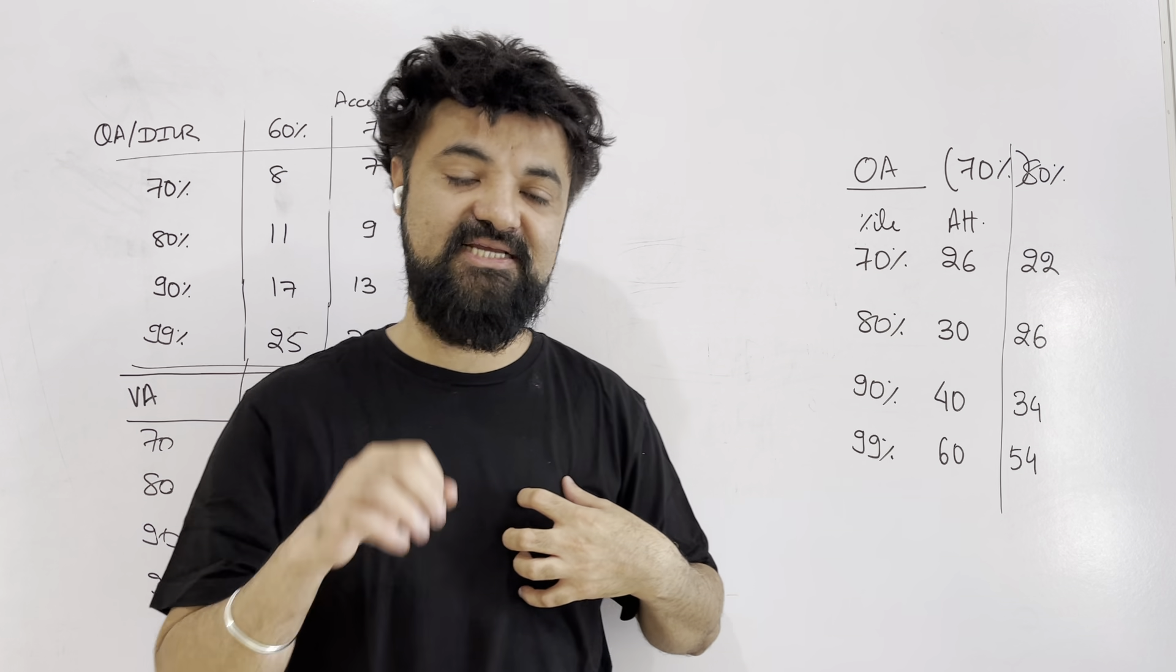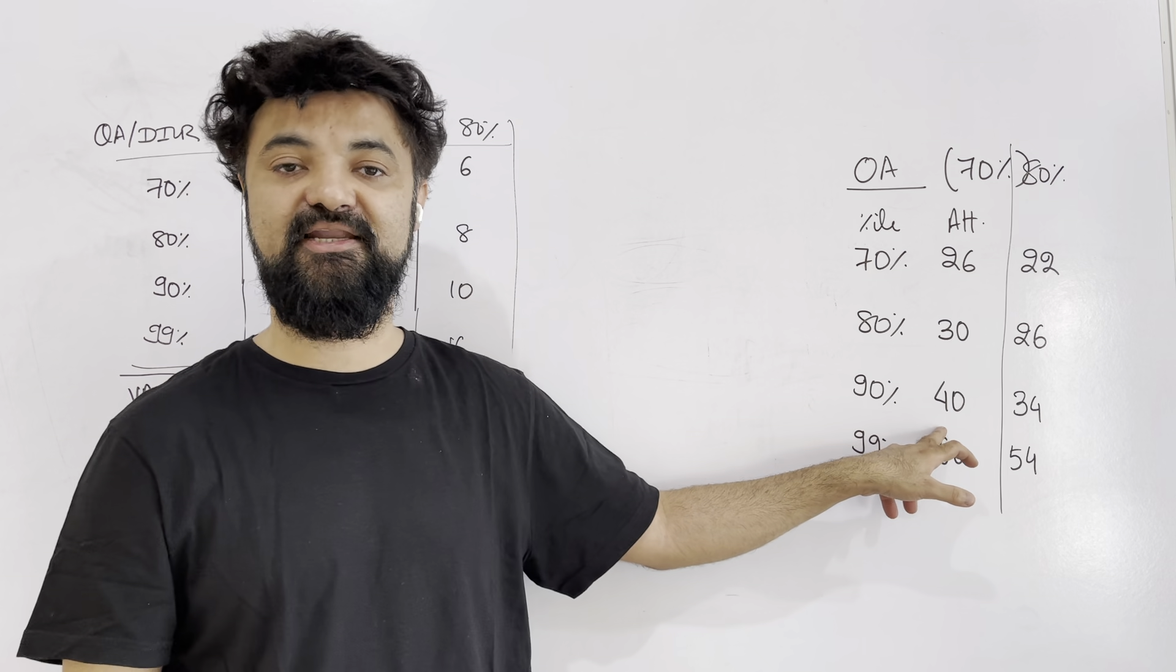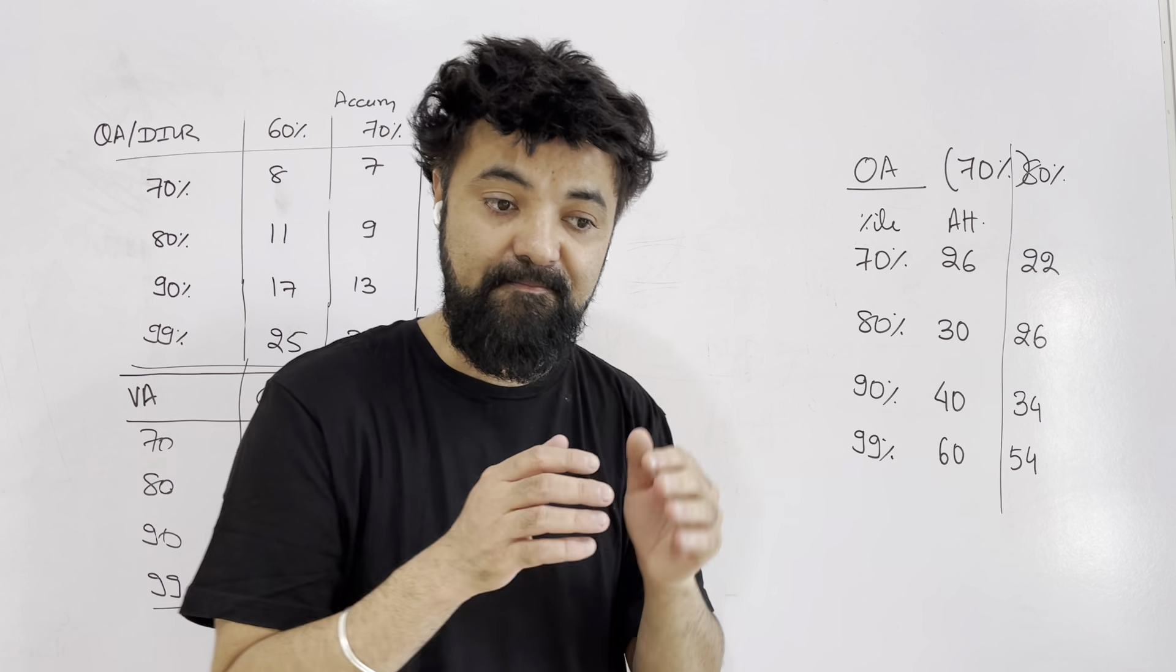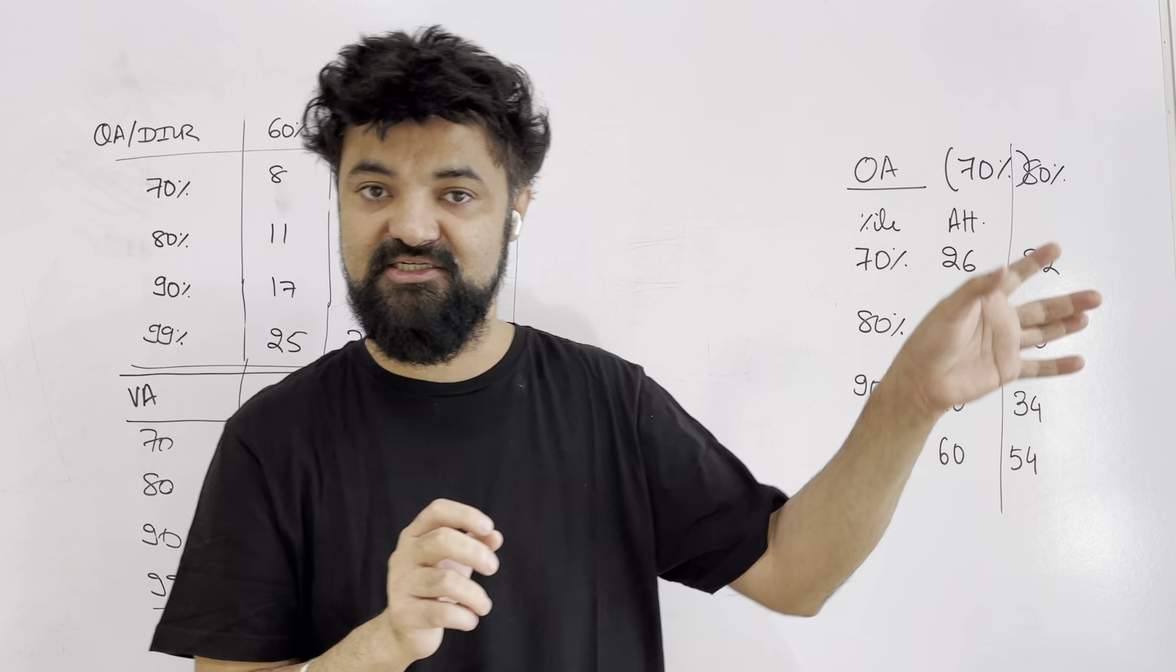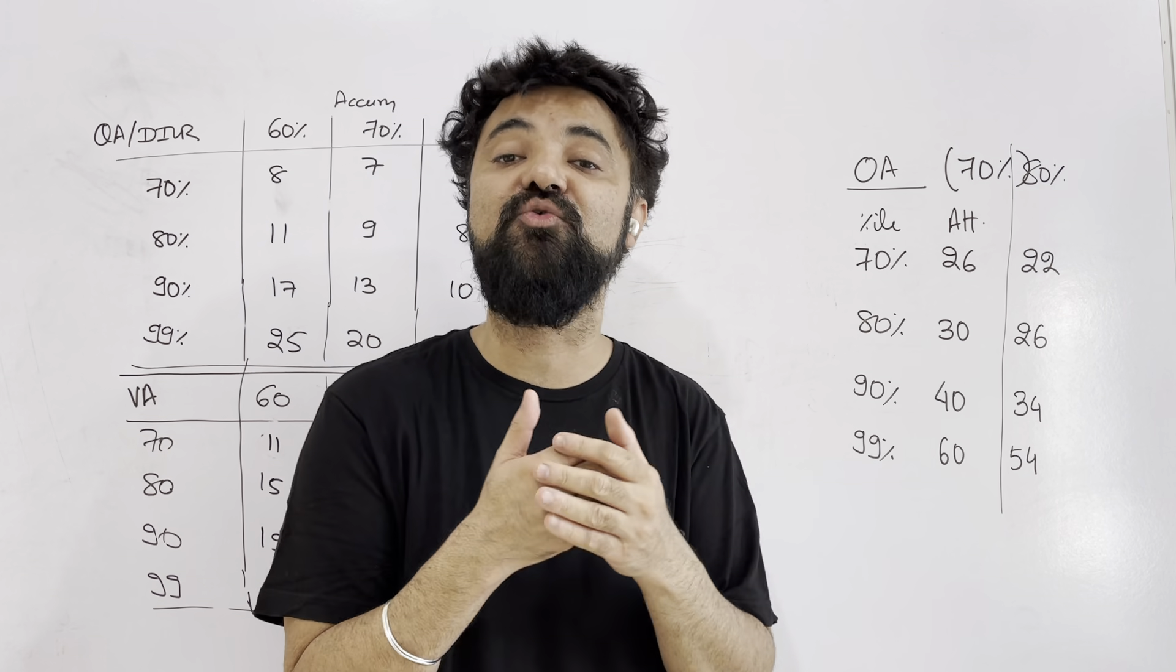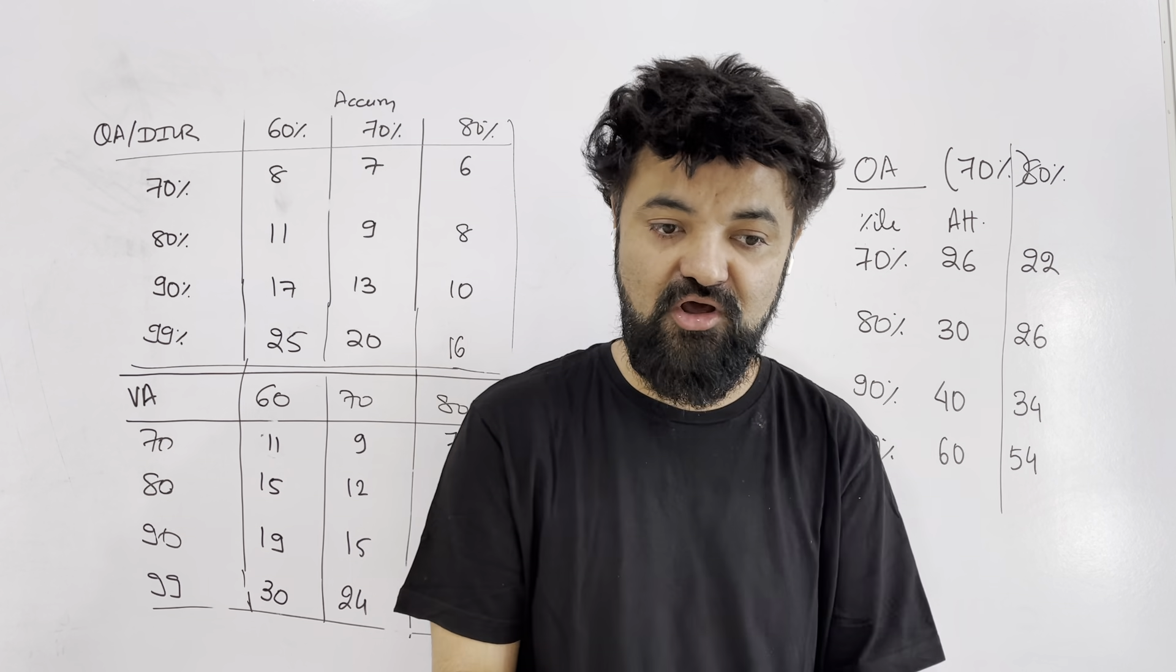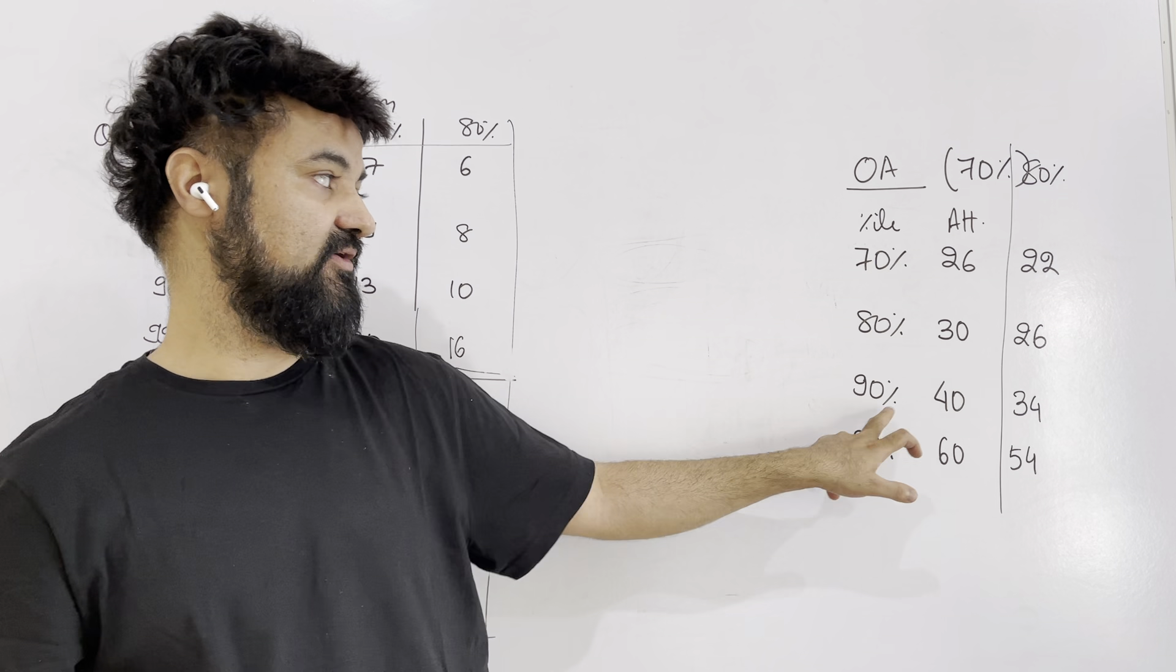For example, my accuracy is 70 percent. In that case, my target is to get 90 percentile, I need to attempt around 40 questions based on the timer we have. This is not as per last year what happened, this is not as per what you can do in 3 hours, this is what you can do in 2 hours. In fact, what you can do in 40 minutes.